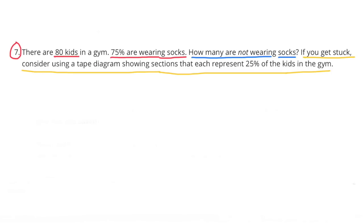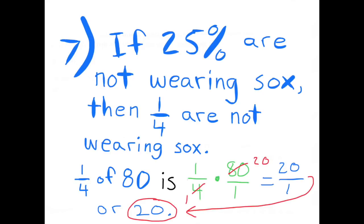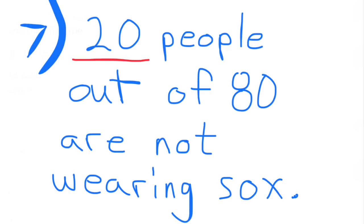Problem 7: There are 80 kids in a gym. 75% are wearing socks. How many are not wearing socks? If 25% of the kids are not wearing socks, then 1/4 of the kids are not wearing socks, since 25% is the same as 1/4. And 1/4 of 80 is 1/4 × 80, which equals 20. So 20 people out of 80 are not wearing socks.